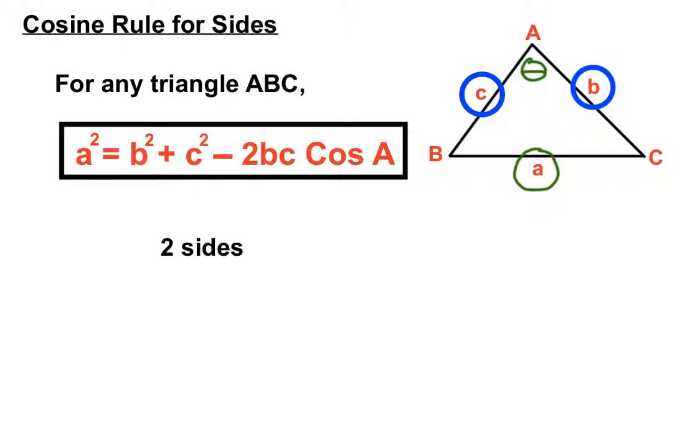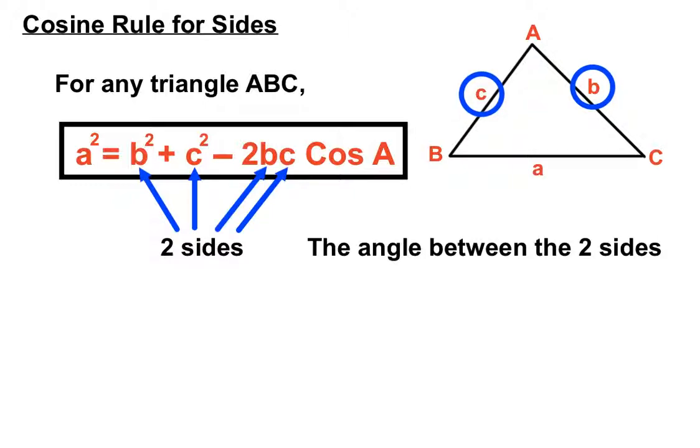So our two sides, C and B there, are going to go into actually four spots into the formula. They're going to go in there, they're going to go in there and get squared, and they're going to multiply by two and with each other. And also we're going to use the angle that's between the two sides, and we're going to put that after a cos into this formula.